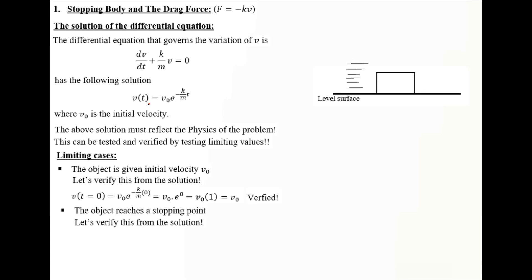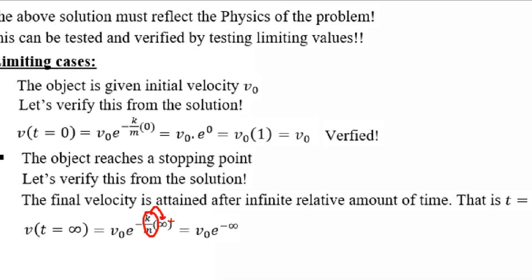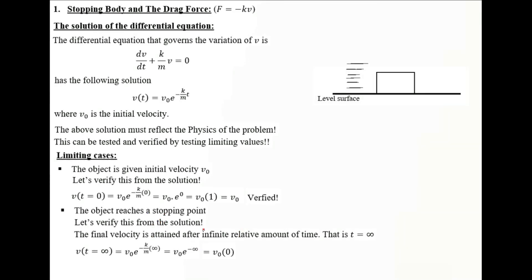At T equals infinity, V equals V0 times e to the power minus infinity. Since K over M is positive, K/M multiplied by infinity gives infinity, so e to the power minus infinity equals 0. This verifies that at the end of the trip, the block reaches a stopping point with velocity equal to 0.